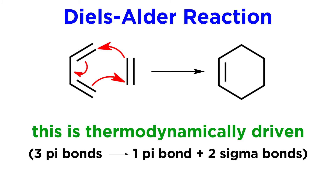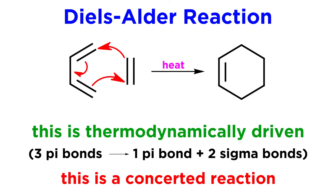This is a thermodynamically-driven reaction, based on the stability of sigma bonds over pi bonds, given that three pi bonds go to form one pi bond and two sigma bonds, which occurs under appropriate thermal activation, meaning above a certain temperature. In displaying this mechanism, we must understand that these arrows are not to be interpreted literally. The pi electron density does not cyclize in a specific direction — the pi bonds dissipate as the new bonds materialize in concerted fashion.